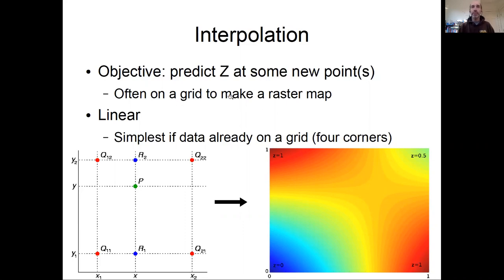A gridded map or raster map or some other interpolated map—you're predicting values at specific locations from the points that you already have. I'm going to go through progressively increasingly complicated or sophisticated ways of doing that.